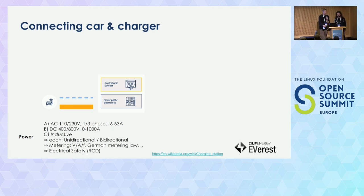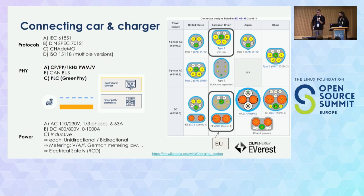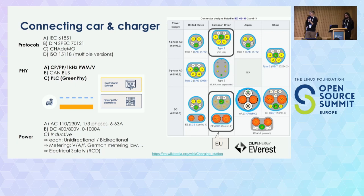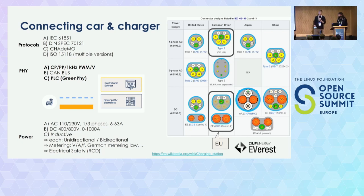Where it gets really interesting is when you think about the data link. You use this data link to communicate between the charger and your car. The communication is not the same for AC and DC charging — there are different communication standards for AC charging, for DC charging, and for different types of each. When we start with AC charging, you usually use the Type 2 plug. It uses a really simple pulse width modulation to communicate from the charging station to your electric vehicle. You exchange a minimum of data: the states of your vehicle and charger, the capacity of the charging cable, and the maximum amount of current allowed to charge.